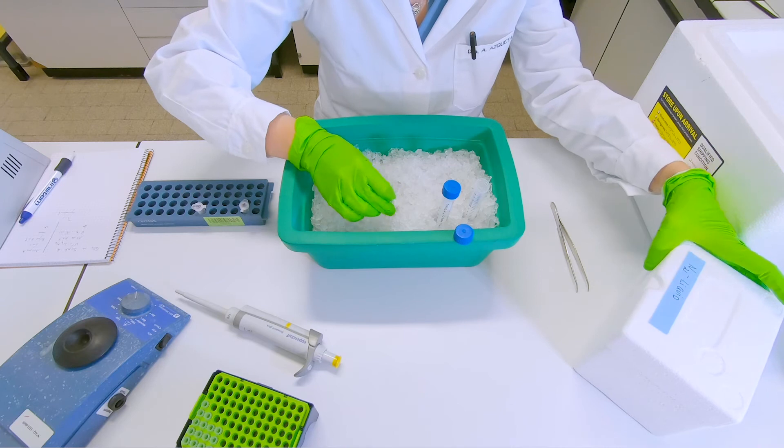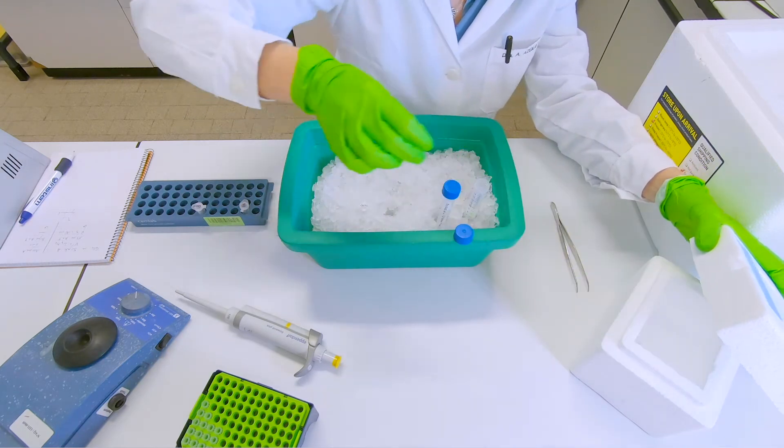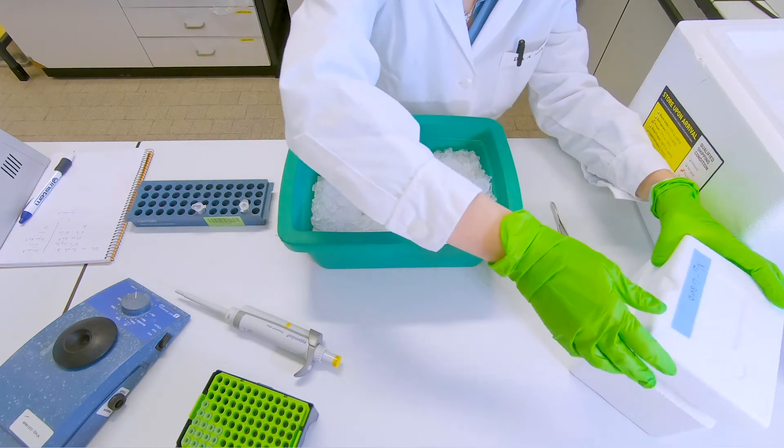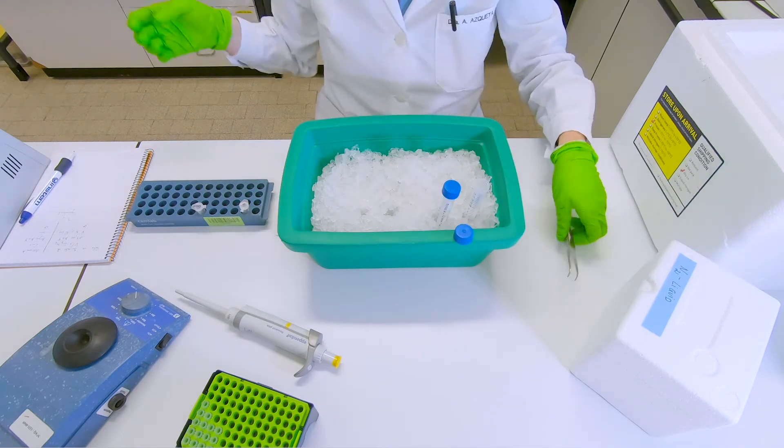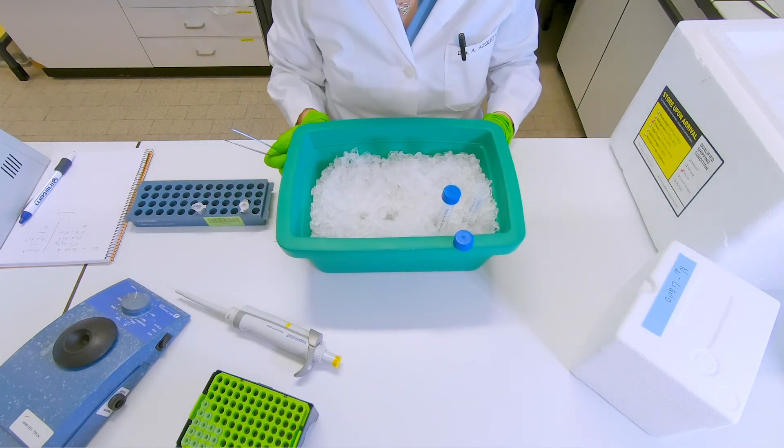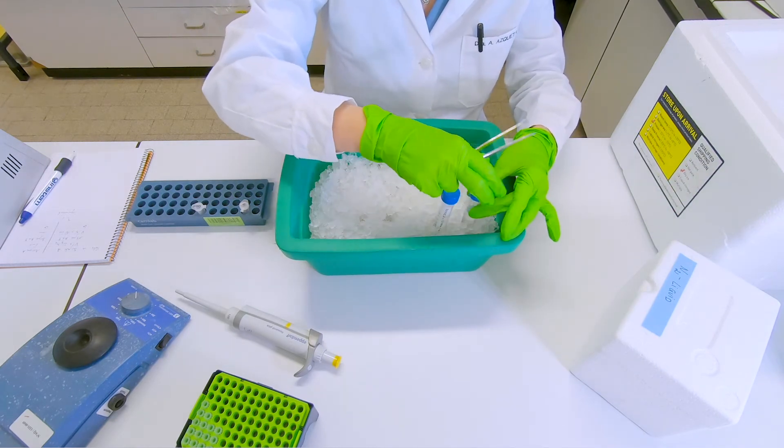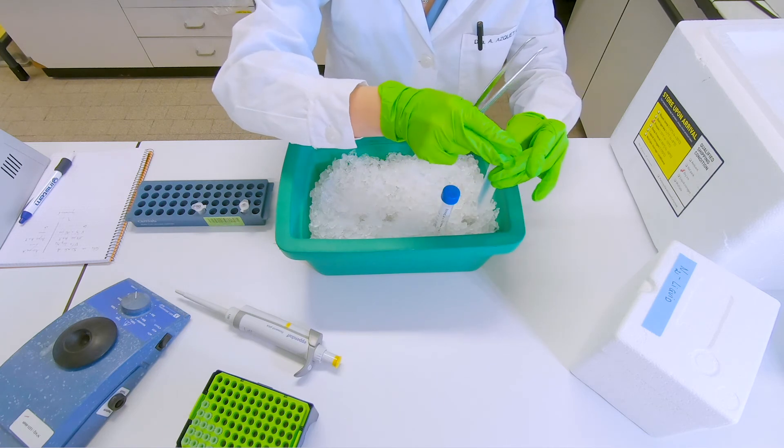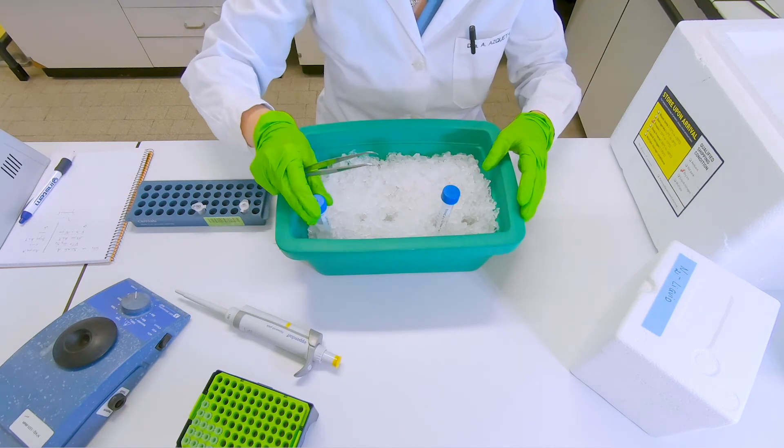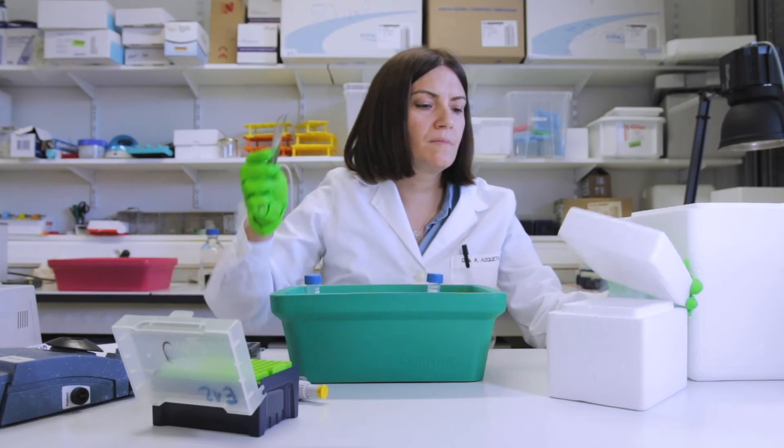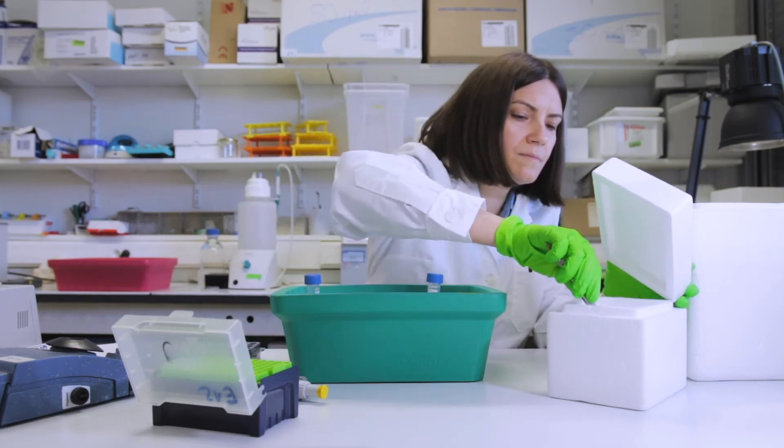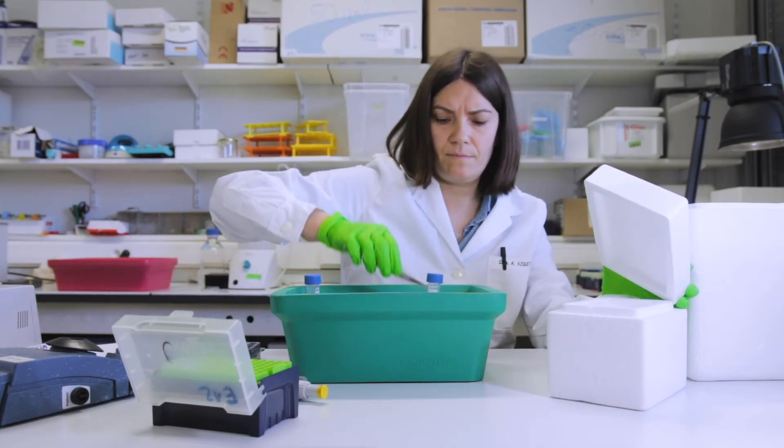And then we will snap freeze them by dropping them in liquid nitrogen. We leave them until it stops bubbling. And this is done to actually, the snap freezing will help break the cells because of the crystal formation. So when it stops bubbling, you take out the tubes and let them defrost.